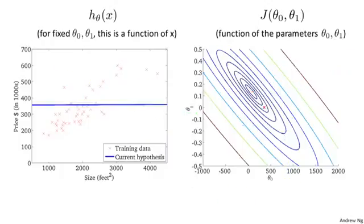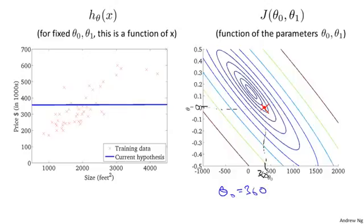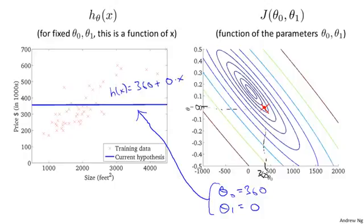Here's a different hypothesis that's still not fitting the data well, but maybe slightly better. My theta zero value is about 360 and my theta one equals zero. This pair of parameters corresponds to a flat line: h of x equals 360 plus zero times x. This hypothesis again has some cost, plotted as the height of the j function at that point.